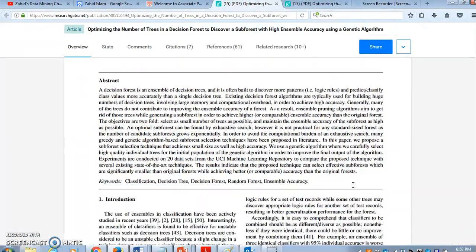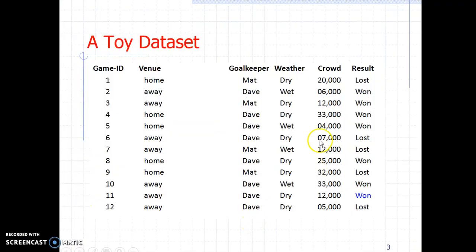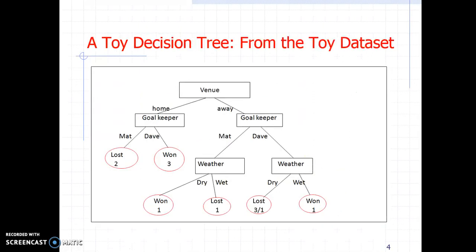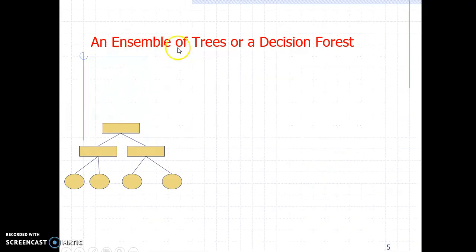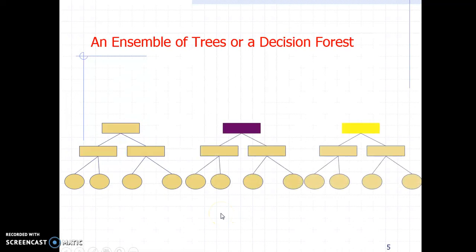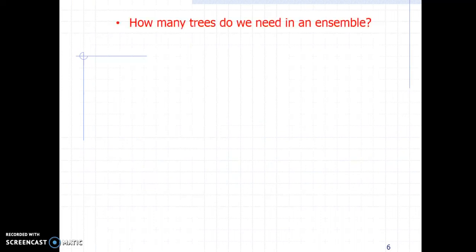If we have a dataset like this, we can build a decision tree using many existing decision tree builder algorithms. A decision tree can give you a lot of information about the dataset — it can extract many patterns from the underlying data which help you discover knowledge and use it for future prediction. Instead of building just one decision tree, we can build an ensemble of trees, also known as a decision forest, which is simply a set of decision trees. The question is: how many trees do we need to make the ensemble most effective?